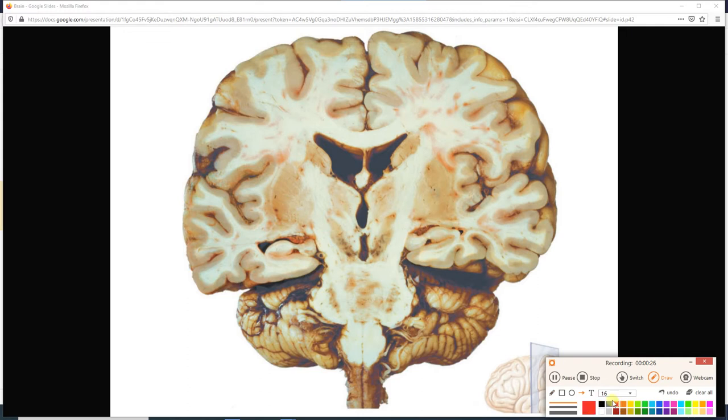For example, if I look right here, this white matter right here is not leaving this right hemisphere. So that is an example of an association fiber. Now this guy right there, that bit of white matter is connecting the right and the left hemispheres to one another. So that is a commissural fiber.